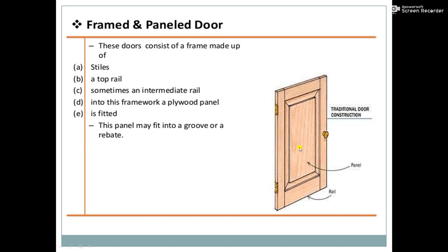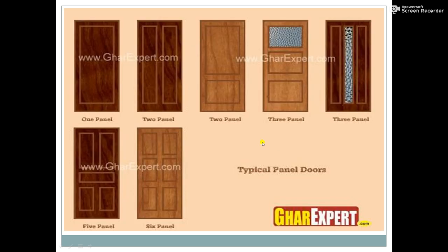To the frame or to these rails, one plywood panel is attached at the center. As per the design of the door, we may have a 2-panelled or 3-panelled door. The panelled door is generally made up of timber. Some types of panelled doors are 1 panel, 2 panel, 3 panel, 5 panel, and 6 panel, depending on the design.